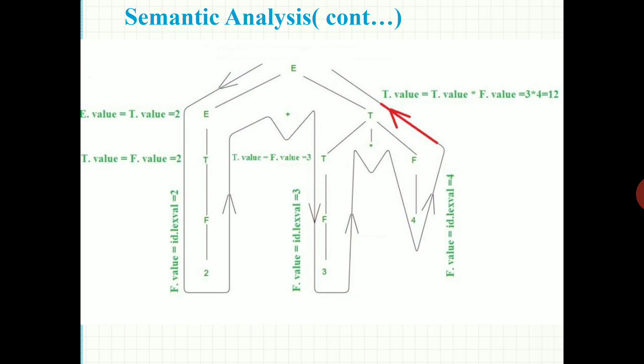So T.val = T.val * F.val, that is 3 * 4 = 12, and the corresponding value is stored in T.val. In the last reduction, we perform E.val = E.val + T.val. The value of E is 2 and the value of T is 12, and their sum gives us 2 + 12 = 14. We get the value of the root as 14.